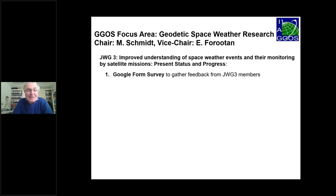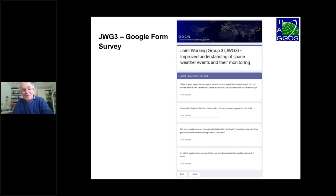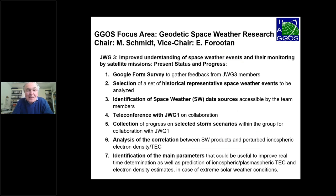A short summary of what joint working group 3 is doing: there was a Google Forms survey to gather feedback from the members of the group. This is an overview of what was asked in this survey. All the different points which are the consequences of that survey have been listed: the selection of historically representative space weather events, identification of space weather data sources, and so on. There is a large list of things which happened as a consequence of the survey results.